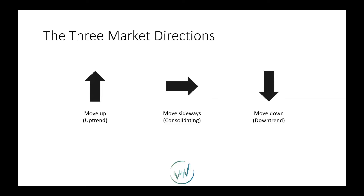I know this is simple, but there's a key point here. If you want to build a sustainable edge in the market, you must have an objective way to determine trend. Having objective rules — that's the backbone to developing an edge.